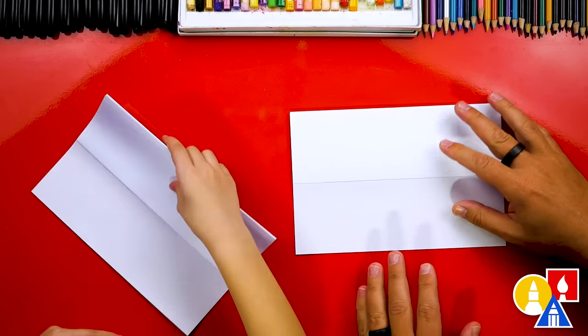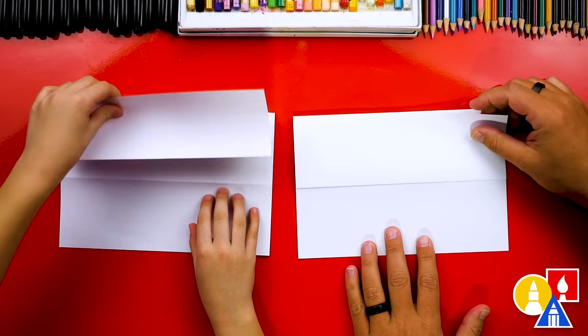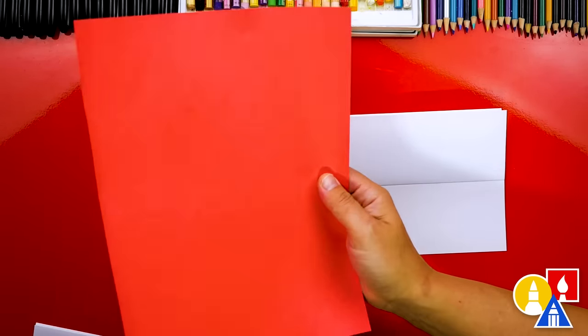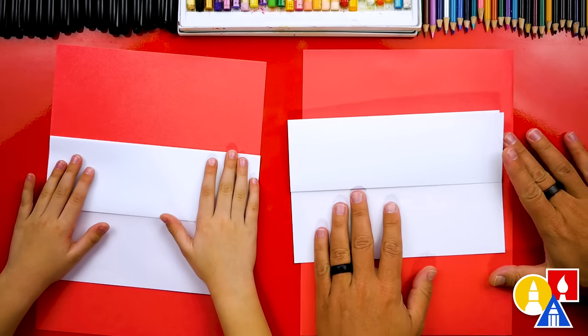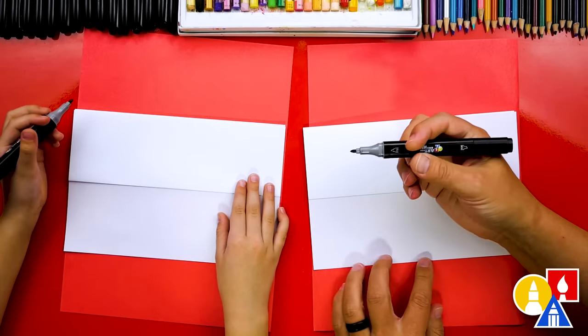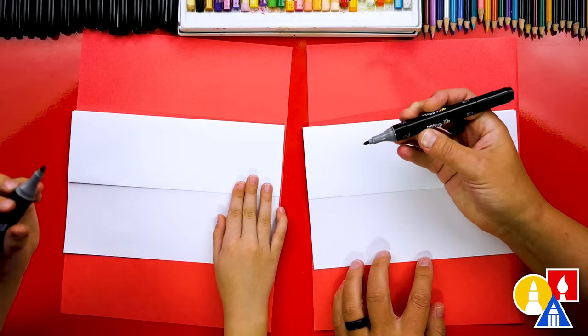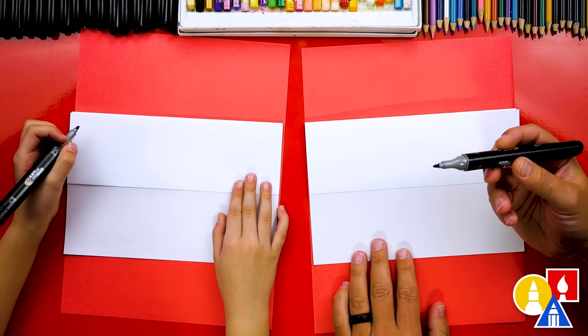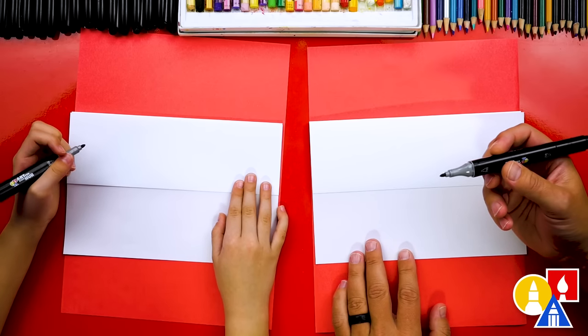When we're all finished it should open up like this. Next we can put scratch paper underneath our drawing paper just to protect the table because we're using markers. Now we're ready to draw. You could use a pencil or crayons or maybe even paint if you wanted.